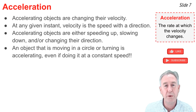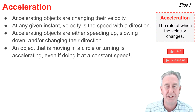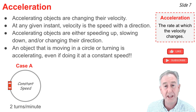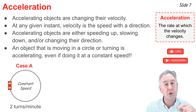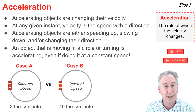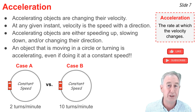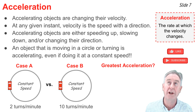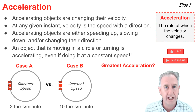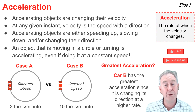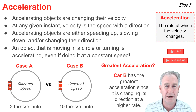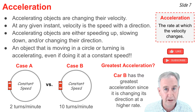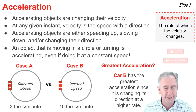Acceleration is the rate at which velocity changes. Consider two uniform circular motion situations: case A, in which the object makes 2 revolutions per minute, versus case B, in which the car makes 10 revolutions per minute. In which case is the acceleration greatest? It's whichever case has the greatest rate of turning. Making 10 revolutions per minute is a much higher rate of turning than 2 revolutions per minute, so case B has the greater acceleration.